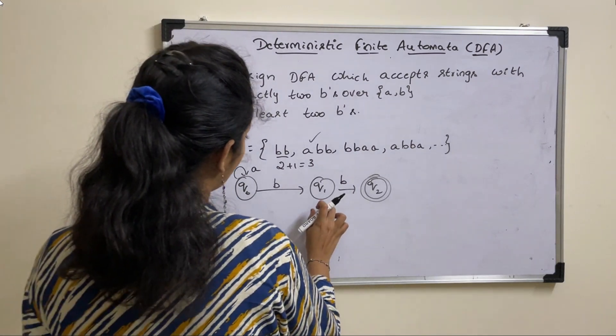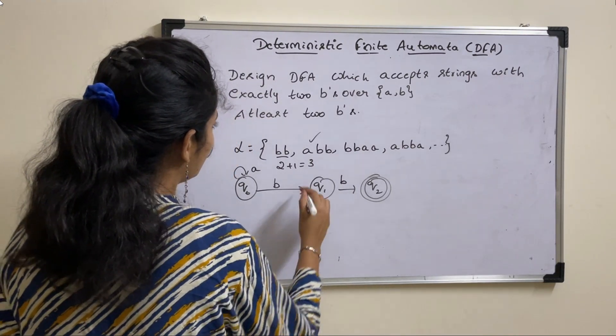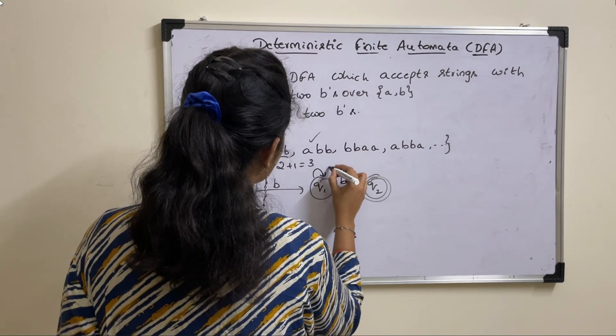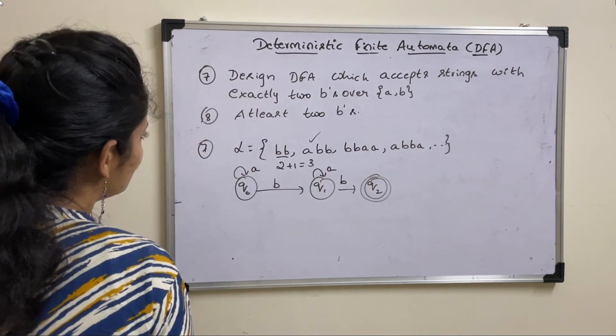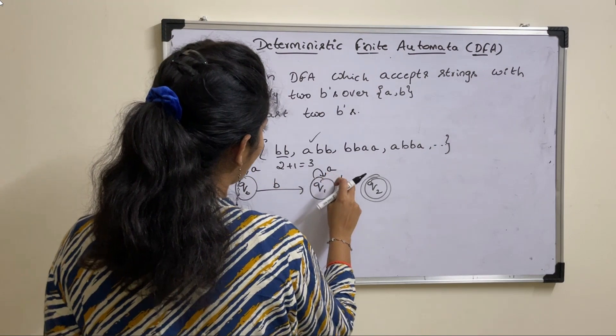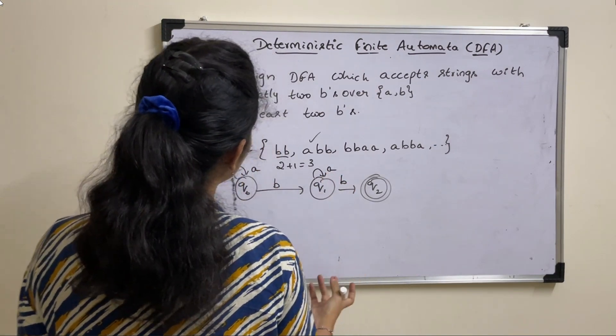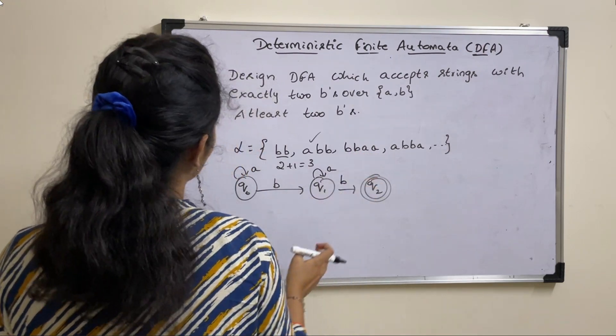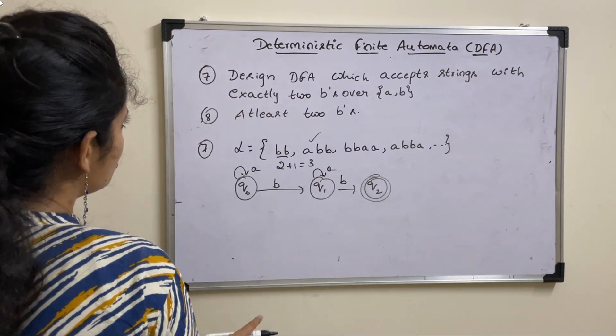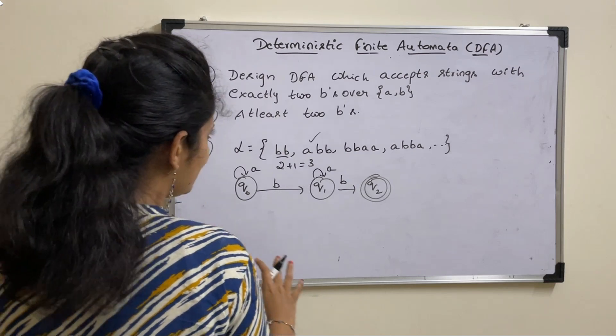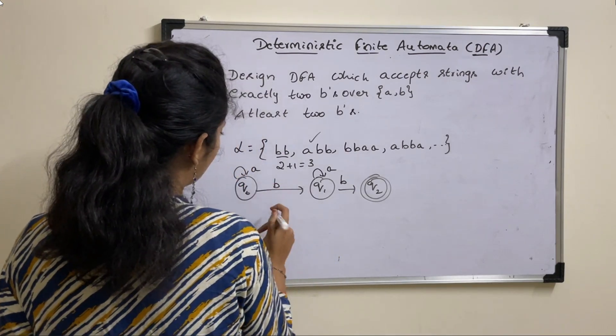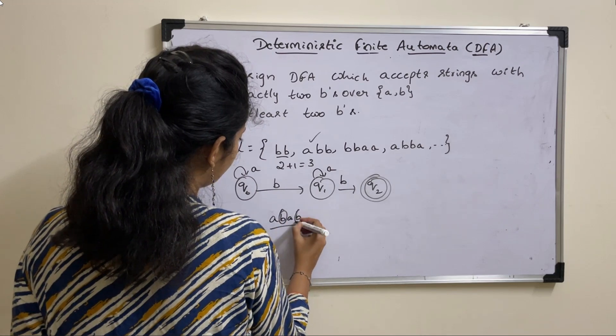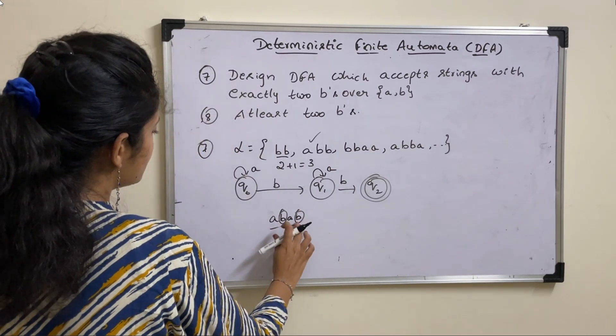Next, on Q1, can we apply A on Q1? Yes, we can apply this. ABAB is also in your system. There is no condition that B and B should occur together. Your string should contain exactly two B's. That's the condition. So you can have ABAB also, where we have two B's.